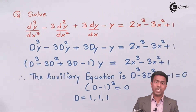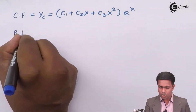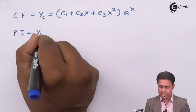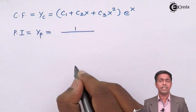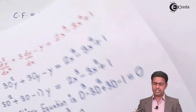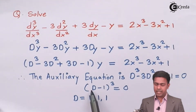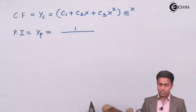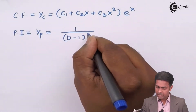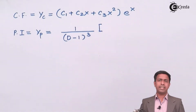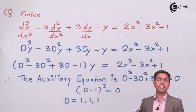Now let's find out the particular integral. The particular integral, also called yp, is given by the formula 1 upon function of D. In our case, this function of D is D minus 1 the whole cube. So I write 1 over (D minus 1) the whole cube, into the right-hand side, which is 2x cube minus 3x square plus 1.